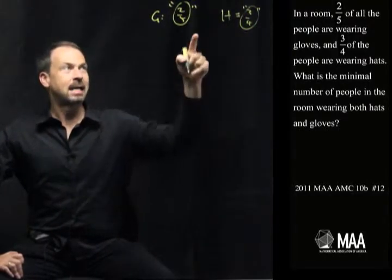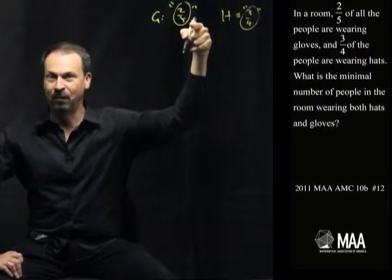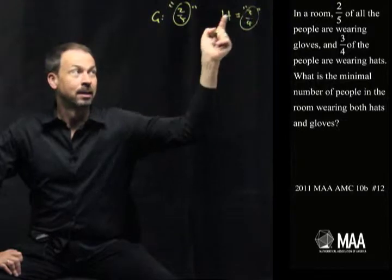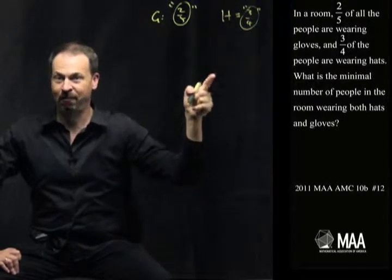So I guess I need the number of people in the room to be some multiple of five, so I can actually work out two-fifths of it, and some multiple of four, so I can work out three-quarters of it. So the number of people in the room has to be some multiple of five and four.